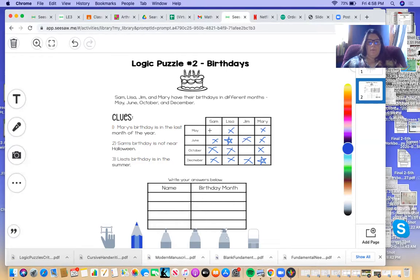Now we know that Sam's birthday is in May. And that leaves Jim's birthday in October.